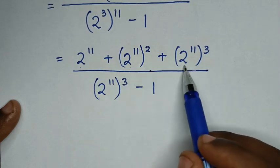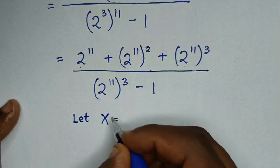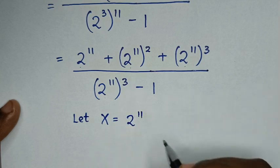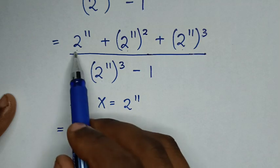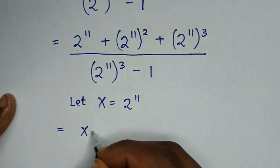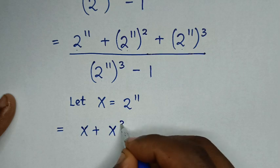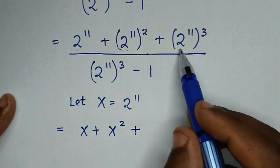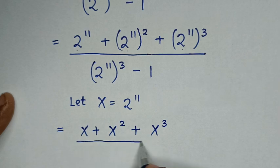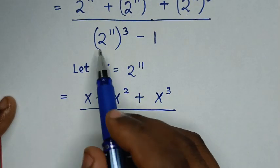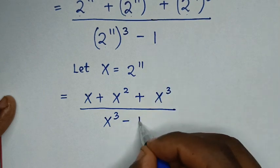Since 2 power 11 is common, we let x equal to 2 power 11. Then the expression becomes x plus x squared plus x power 3, over x power 3 minus 1.